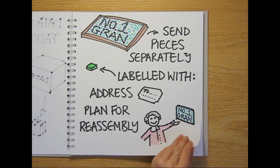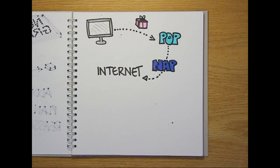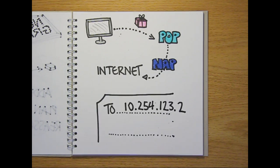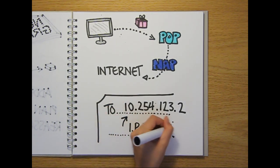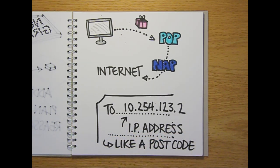Network packets are treated in exactly the same way as your grandma's mosaic, but rather than going through the post, they're sent from your computer to your ISP's POP and then onto the internet. The address they have written on them is called the IP address, which is a unique number, a bit like a postcode, that identifies the computer or device the packets are being sent to.